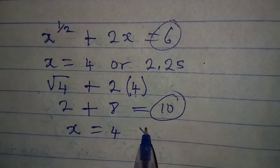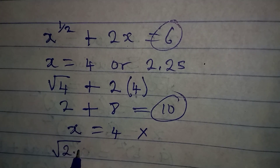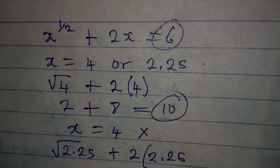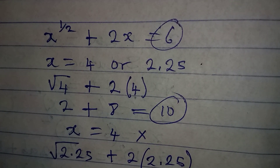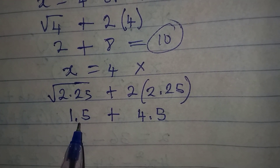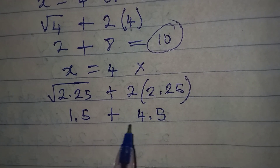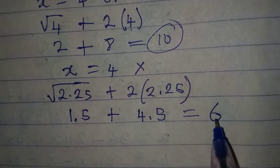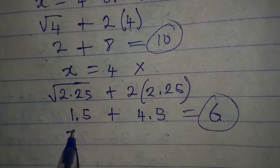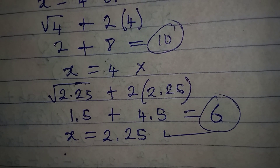Now let's test x equals 2.25: we have the square root of 2.25 plus 2 times 2.25. The square root of 2.25 is 1.5, and 2 times 2.25 is 4.5. Adding these gives 1.5 plus 4.5 equals 6, which matches the right-hand side. This confirms that x equals 2.25 satisfies the equation. Thank you for watching.